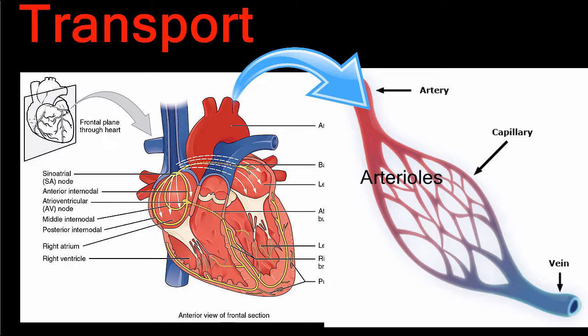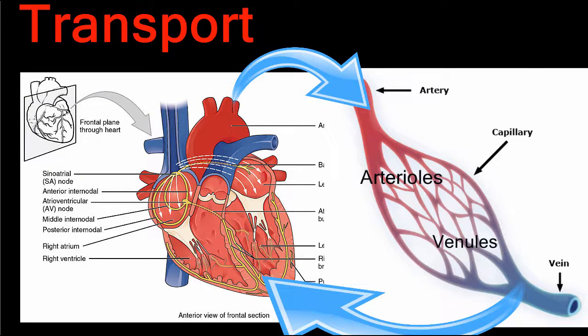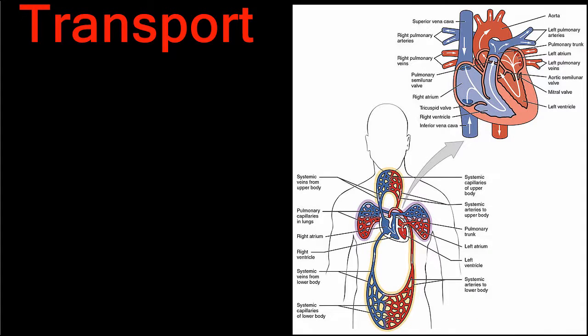Arterioles continue to branch until they are so small they are microscopic. These tiny microscopic vessels are called capillaries. Capillaries deliver blood to every single cell in your body, dropping off nutrients and picking up waste. Then it's time for the blood to head back to the heart. Capillaries rejoin to form small veins called venules. The venules merge to become veins, and the veins deliver blood back to the heart.